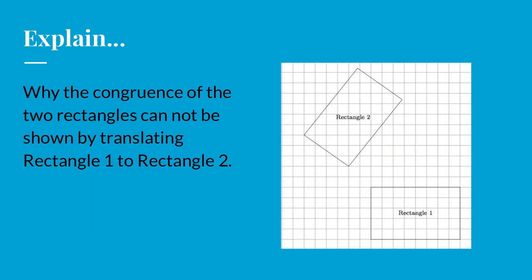Think about the following question and then explain why the congruence of the two rectangles cannot be shown simply by translating rectangle one onto rectangle two. Pause while you formulate your answer and come back and see what I thought.